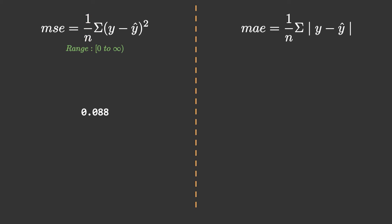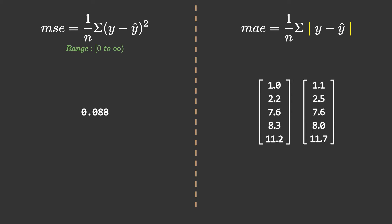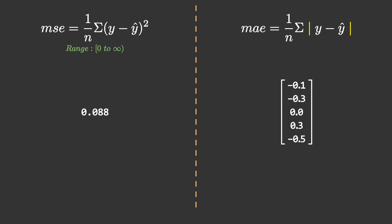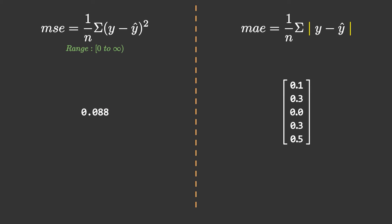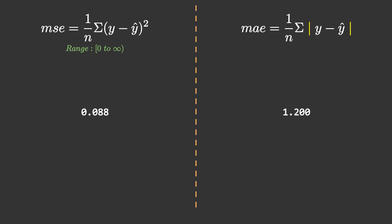Now talking about mean absolute error: the only thing that changes is instead of squaring, we take the absolute value. The absolute operation changes negative values to their positives and keeps positives unchanged. So all the negatives in this matrix will become positives, then we sum up this matrix and divide by n, which is 5. The mean squared error was 0.088 and the MAE is 0.24.